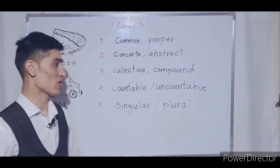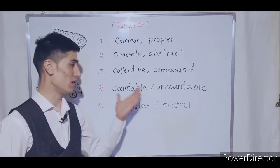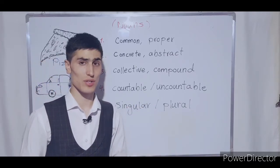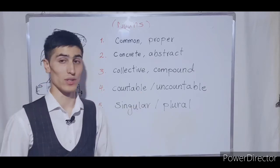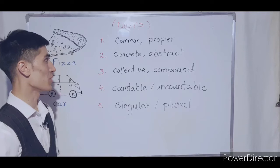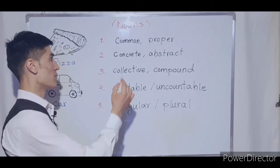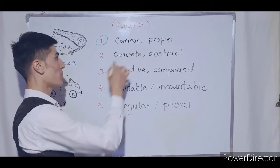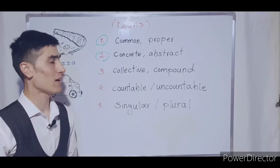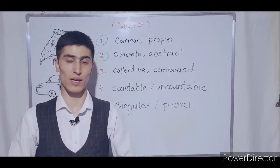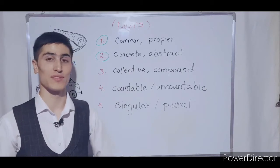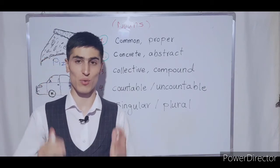So here we have all types of noun in English language. They look a lot but they are very easy. We are going to explain all of them one by one. Today we are going to talk about number one and number two: common noun or proper noun, and concrete noun or abstract noun — these four types of nouns today.